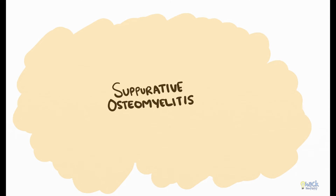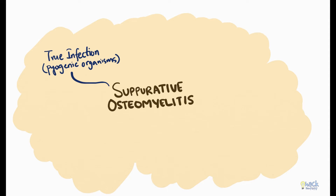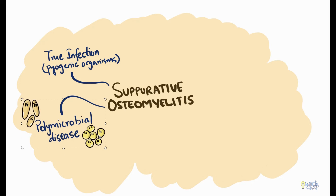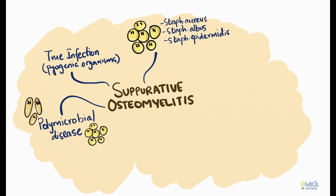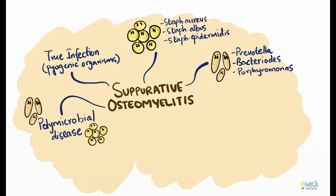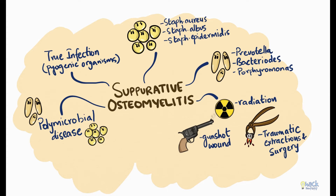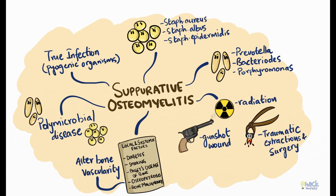Suppurative osteomyelitis is a true infection of the bone caused by pyogenic microorganisms. It is a polymicrobial disease with Staphylococcus aureus, Staphylococcus albus, and Staphylococcus epidermidis being the major pathogens. Anaerobes like Prevotella, Bacteroides, and Porphyromonas have also been cultured from the diseased site. However, other factors like radiation and traumatic injuries such as gunshot wounds or traumatic extractions and surgeries could also cause the disease. There are also several systemic and local conditions that could alter vascularity of the bone, predisposing it to suppurative osteomyelitis.